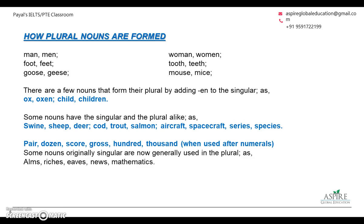One area where many students make errors is subject-verb agreement. We tend to think that every word with an 's' is plural and every word without an 's' is singular — but there are exceptions. For example, pair, dozen, score, and hundred have no 's' but are plural in meaning. Similarly, mathematics has an 's' but is not plural — 'mathematic' is not a word. News, riches, and arms look like plural words but are singular in meaning. News is not the plural of 'new'; they are separate words with different meanings.